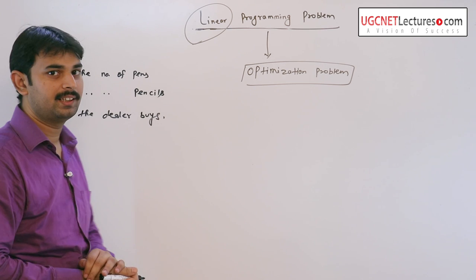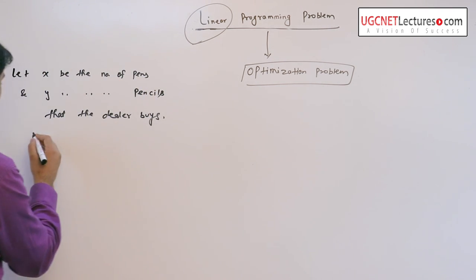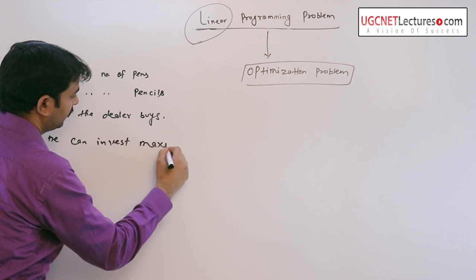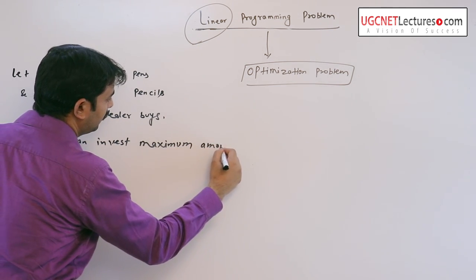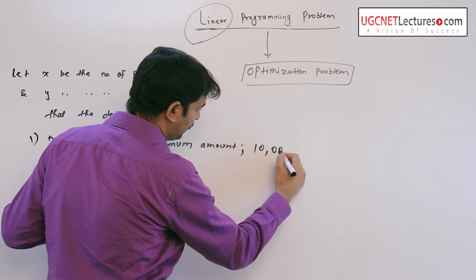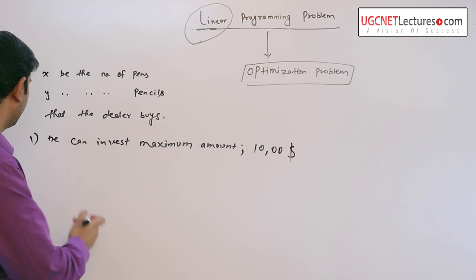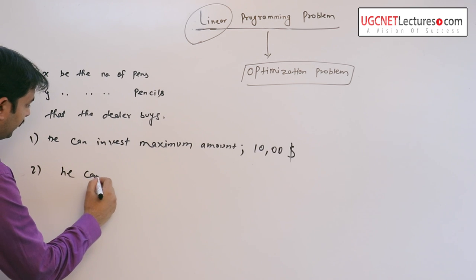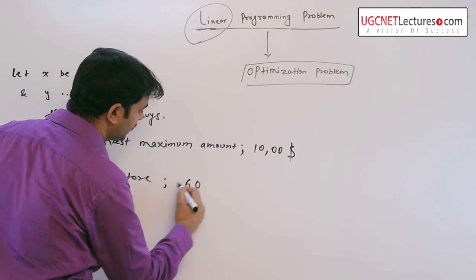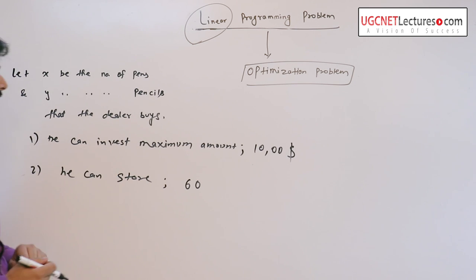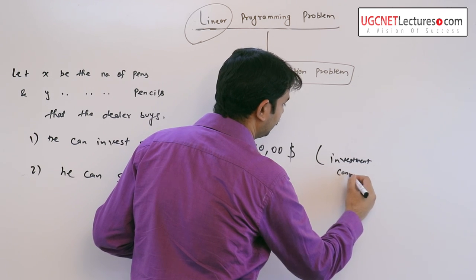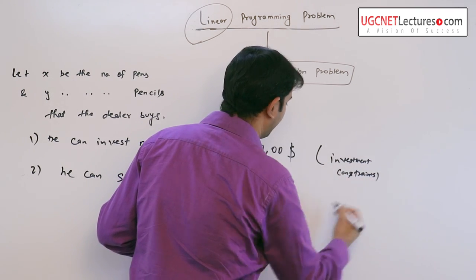But the dealer is constrained that he can invest maximum amount, say $1000, and the second constraint is he can store say 60 items. The first constraint you can say is his investment constraint and the second one can say the storage constraint.